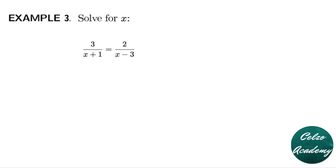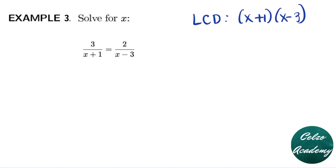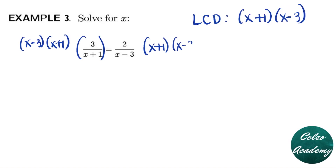Question number three: solve for x in the equation 3/(x+1) equals 2/(x-3). The denominators are (x+1) and (x-3), so that is our LCD. We multiply the left side by (x-3)(x+1) and the right side by (x+1)(x-3). On the left we cancel (x+1), giving 3 times (x-3). On the right we cancel (x-3), giving 2 times (x+1).